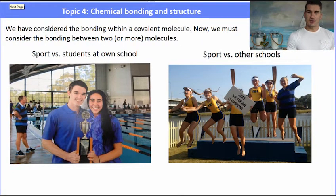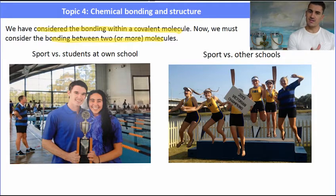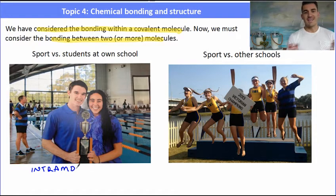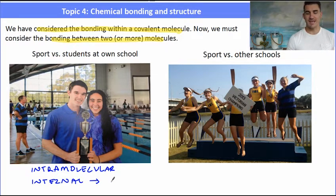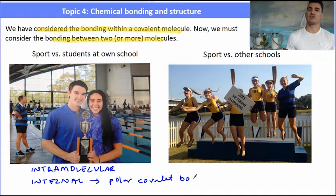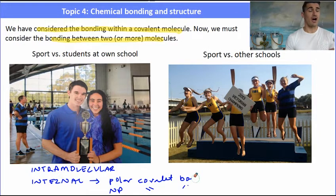We've considered bonding within a molecule — intramolecular bonding. Now, we must consider bonding between two or more molecules. An easy way to think of this is your school sport. If you play sport with people in your own school, you're playing intraschool sport. For molecules, bonding inside the molecule is called intramolecular bonding — that's bonding internally between the atoms in the molecule. The types we've covered so far include polar covalent bonds, non-polar covalent bonds, ionic bonds, or metallic bonds.